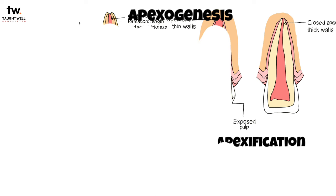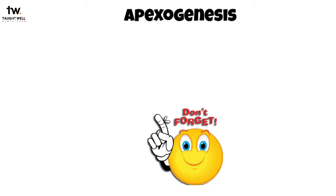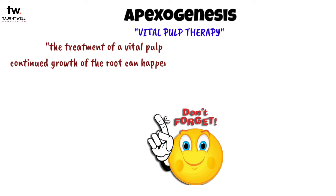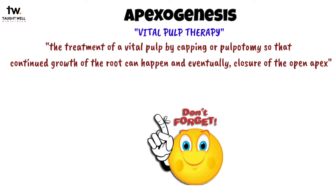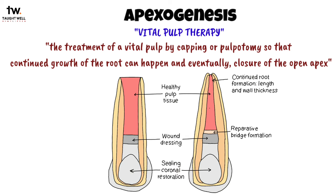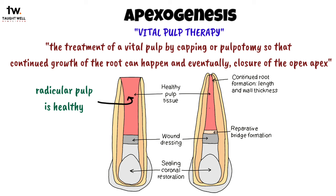The most important point to remember here is that apexogenesis comes under vital pulp therapy. It is defined as the treatment of a vital pulp by capping or pulpotomy so that continued growth of the root can happen and, eventually, closure of the open apex. The logic behind this is that if the radicular pulp is healthy in an immature tooth, then the root growth will happen normally.